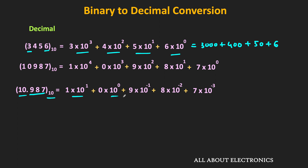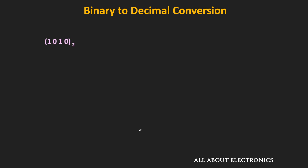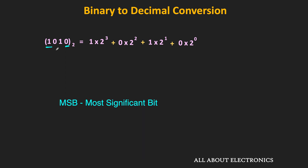If we have a base-3 (ternary) number system, then the weight of each digit is a power of 3. Likewise, in the binary number system, the weight of each digit is a power of 2. The binary digits 1 and 0 are also known as bits. The rightmost bit is the LSB (least significant bit) while the leftmost bit is the MSB (most significant bit). As we move from the LSB to the MSB, the weight of each bit increases by a factor of 2, with the LSB having a weight of 1.